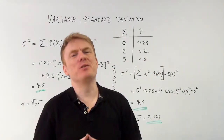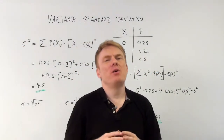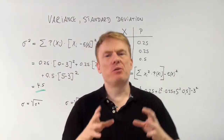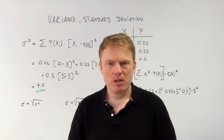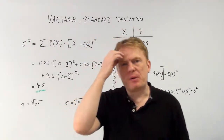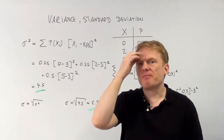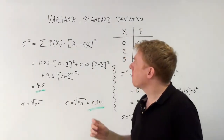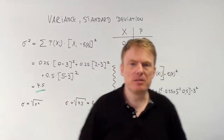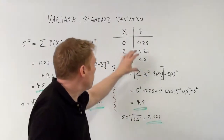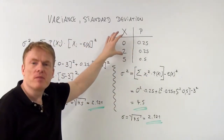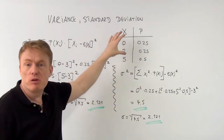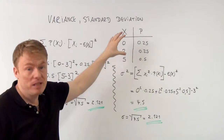Welcome to our next video. We're talking about variance and standard deviation. Those are very important numbers concerning a random variable. For example, this random variable we were talking about already — we were discussing the expected value.